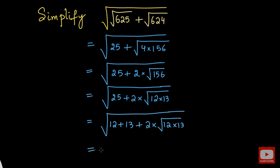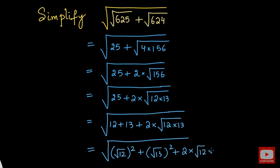Now this 12 can be written as square root of 12 the whole square, right? It's nothing but 12. Plus 13 can be written as square root of 13 the whole square. Plus we have 2 times under root of 12 times 13. This can be separated as root 12 times root 13 using the property of square roots. Let me extend this once again.